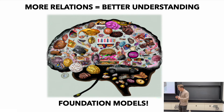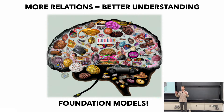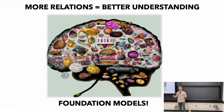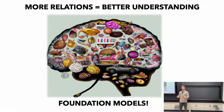Since we get this relational understanding of concepts from observing them, the more relations that we're able to learn and pick up this way, the better understanding we get of each individual concept. It's this synergetic reinforcing procedure — there are network effects here. Understanding something like love helps you understand what a dog is, because a dog loves its owner.